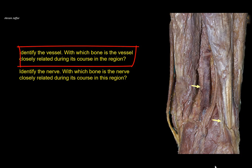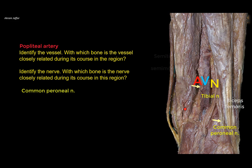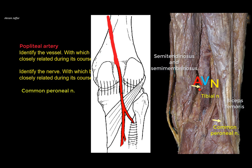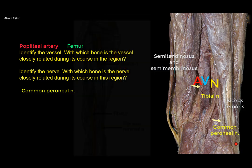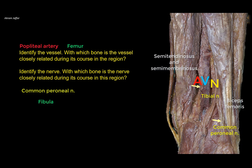Identify the vessel and note which bone it is closely related to during its course in this region. In the popliteal fossa, the deepest structure is the popliteal artery, then more superficial is the popliteal vein, and most superficial is the tibial nerve — a branch of the sciatic nerve. The other branch is the common peroneal nerve, seen passing to the lateral side alongside the tendon of biceps femoris. The popliteal artery is closely related to the popliteal surface of the femur between the two supracondylar lines. The common peroneal nerve winds around the neck of the fibula, where it is subcutaneous and can be compressed against the bone.